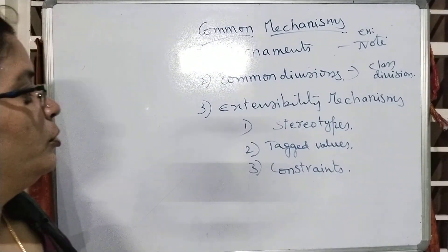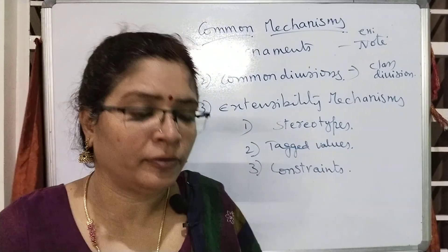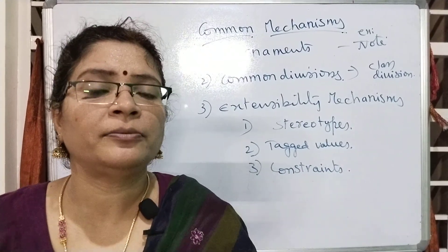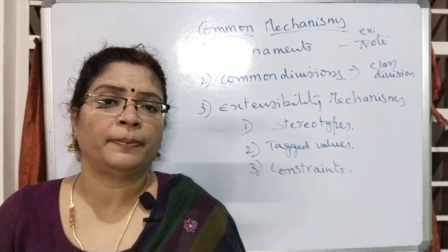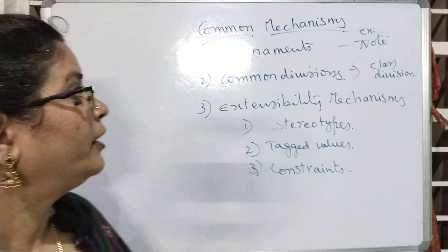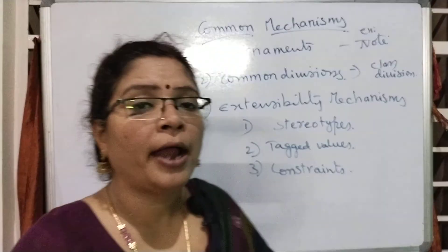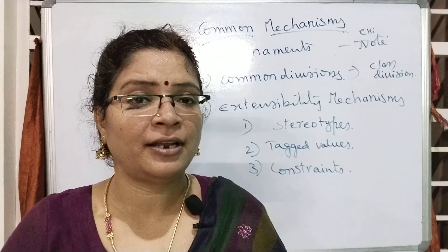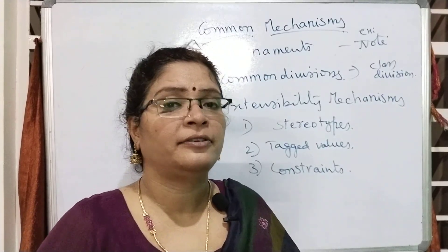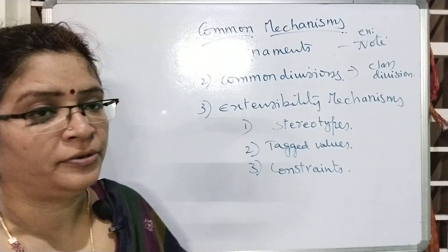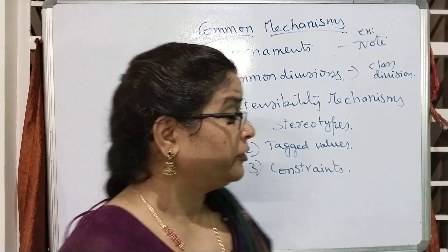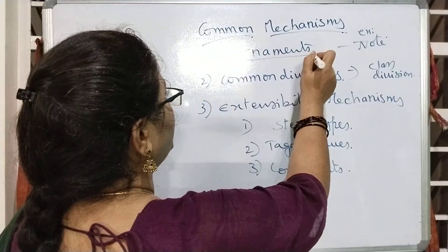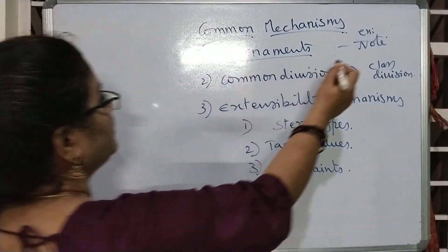What is the purpose of these common mechanisms? These common mechanisms normally facilitate the people who work with UML to add some extra things for easy understanding and for easy identification purposes. First of all, we will see adornments. Adornments — the best example for this is 'note.'